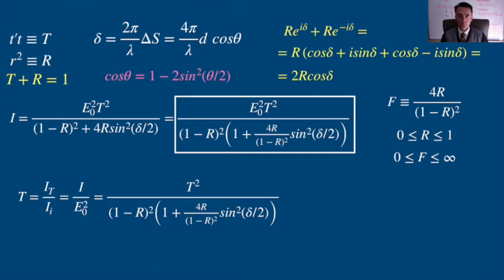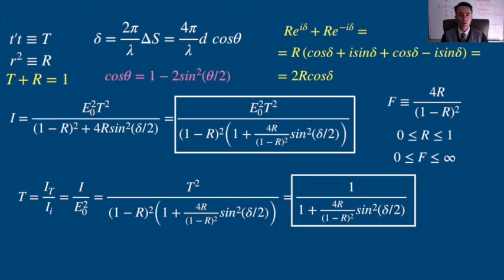Then this, for a given reflectivity R and a given phase difference, remember that the phase difference depends on the distance d, the wavelength λ, and the angle of incidence θ. So for a given R and δ, we can plot this transmissivity.